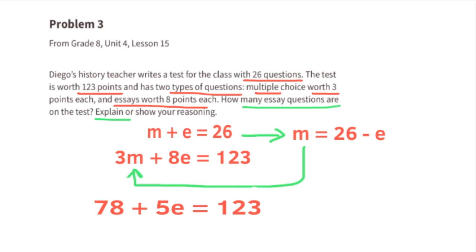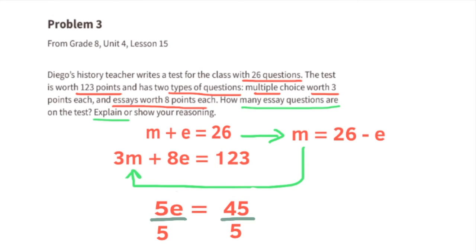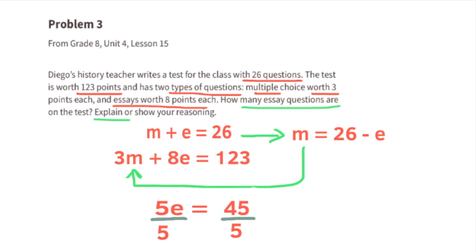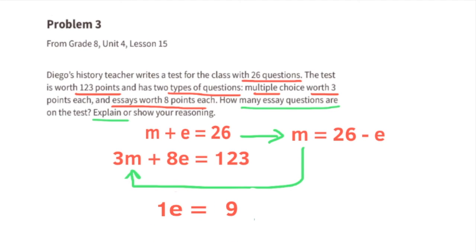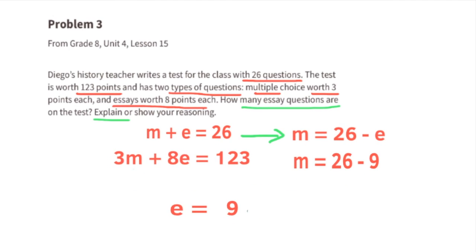Since we're solving for E, we need to subtract 78 from both sides. That leaves us with 5E equals 45. We want just 1E, so let's divide both sides by 5. 5E divided by 5 equals 1E, and 45 divided by 5 equals 9. We know that E equals 9. Now we can substitute E with 9, making M equal to 26 minus 9. So M is equal to 17. There are 9 essay questions and 17 multiple choice questions.